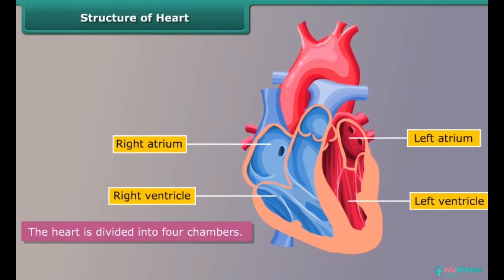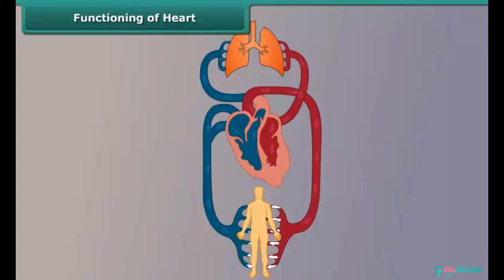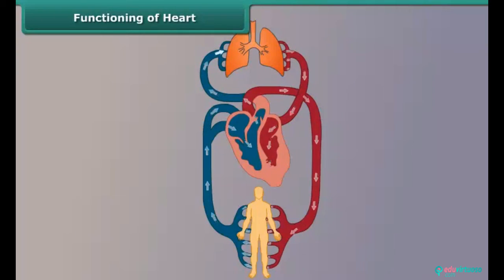The heart is divided into four chambers. The two chambers at the top are the left atrium and the right atrium. The two chambers at the bottom are the left ventricle and the right ventricle. The muscle called the septum divides the left side from the right side. The right side pumps deoxygenated blood received from the body into the lungs for purification. The left side pumps oxygenated blood received from the lungs to the rest of the body.